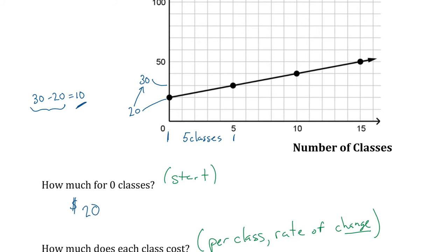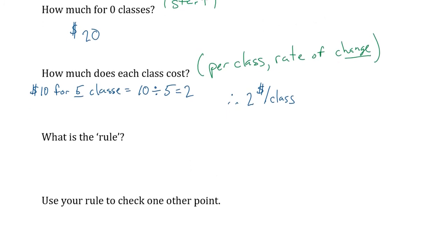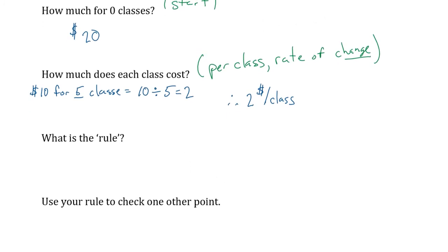Those are the two important things. Once the start clicks for you, it's fairly straightforward. For the change, I have to look at two parts: what was the change in the number of classes, and what was the change in cost? It went from $20 to $30, which is an increase of $10, and that was for five classes. So $10 for five classes is $2 per class.